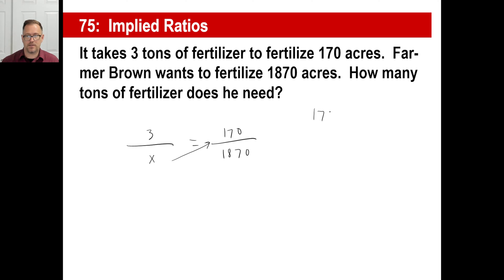So, 170 times X equals 3 times 1,870. That'll be 5,610. And, you will do the arithmetic and you'll find that the answer is 33. There you go.